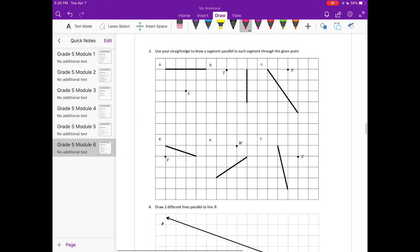Number 3, use your straight edge to draw a segment parallel to each segment through the given point. So, let's start with A. Okay. So, there's a line. And I'm going to use point S and draw a line through point S to make it parallel. So, there's one. Let's do the next one. So, B, we need to draw a line through point T to make it parallel. There. There's one.